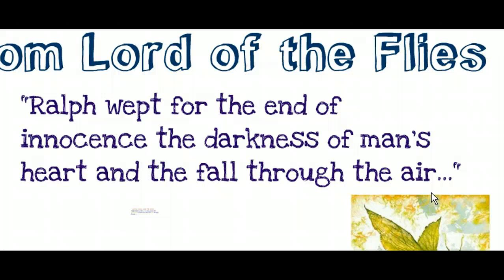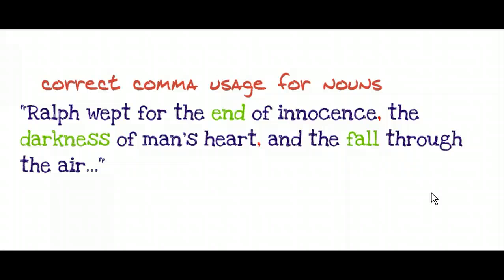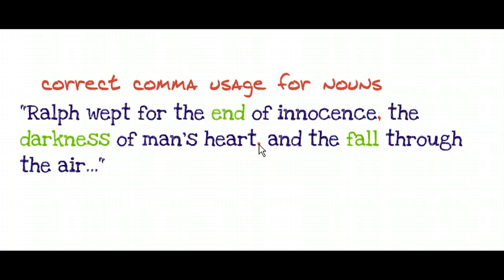Here's correct comma usage — using two commas to separate three nouns. The nouns are highlighted: fall, darkness, and end. Because those are the three nouns in this sentence, we need to separate them with two commas. One comma should go after the word 'innocence,' the other one after 'heart,' to separate these three different ideas.